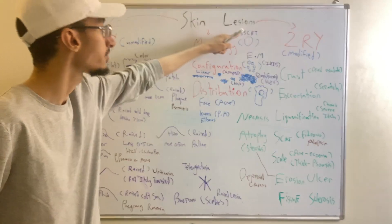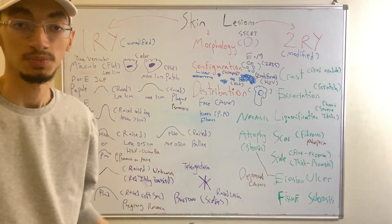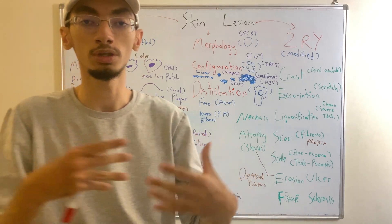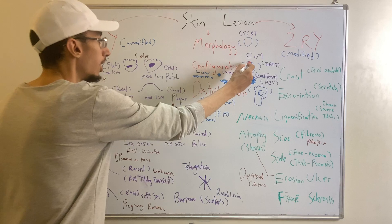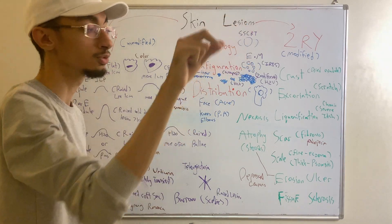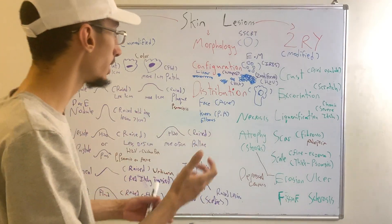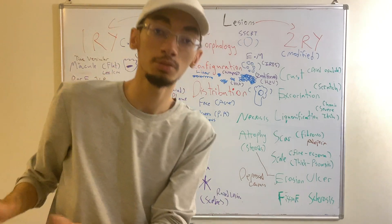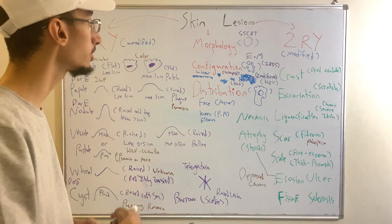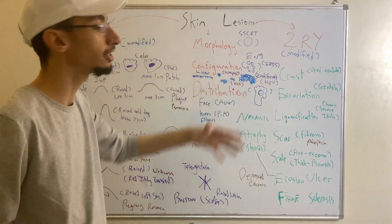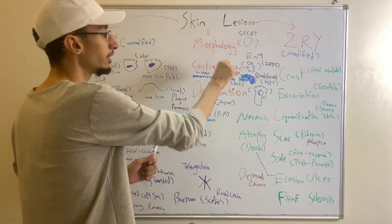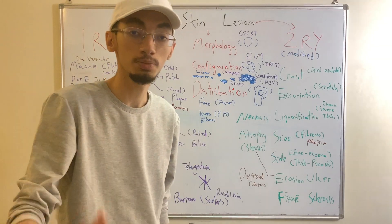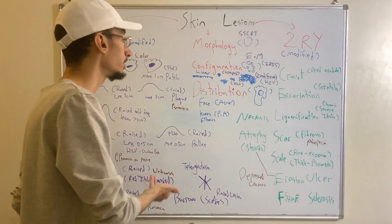The second element is configuration — how is the lesion arranged, or how are multiple lesions related to one another. For example, in erythema multiforme, you can have what are known as target lesions, also called iris lesions. These are plaques arranged in concentric circles, and this circular arrangement is exactly what gives them the 'target' appearance.